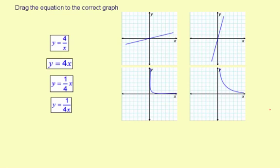Drag the equation to the correct graph. So let's look at these equations. We have y equals 4 divided by x, that's an inverse variation. y equals 4x, that's a direct variation. y equals 1/4x, that's a direct variation. y equals 1 divided by 4x, that's an inverse variation.